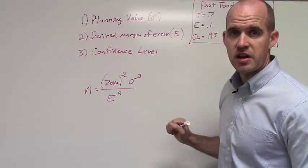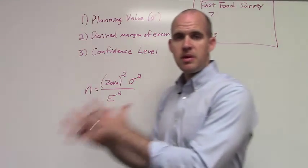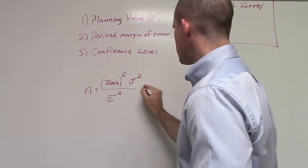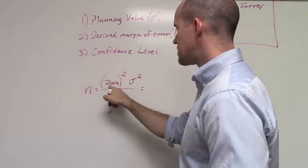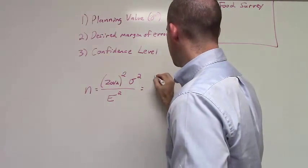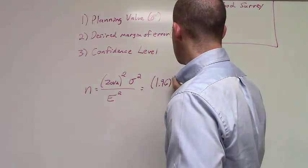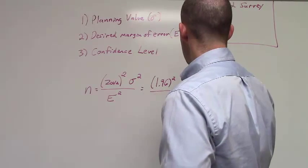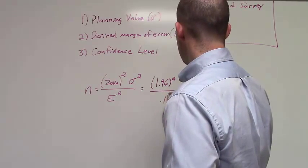And I want a 95% confidence level. So how many people do I need to survey in order to achieve that? Well, we know that our confidence level, Z-alpha divided by 2, that's going to be 1.96 squared. We're multiplying that by our planning value, squared. And we're dividing by our margin of error, squared.